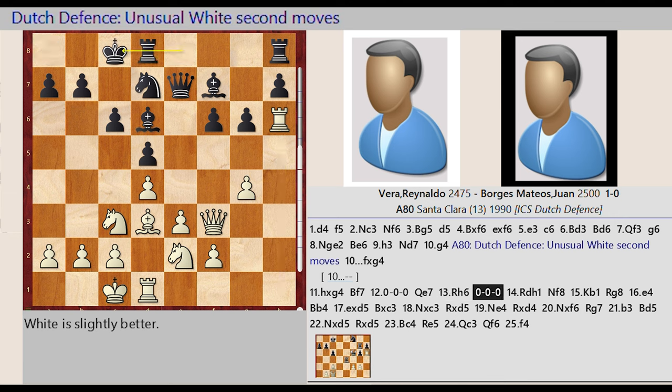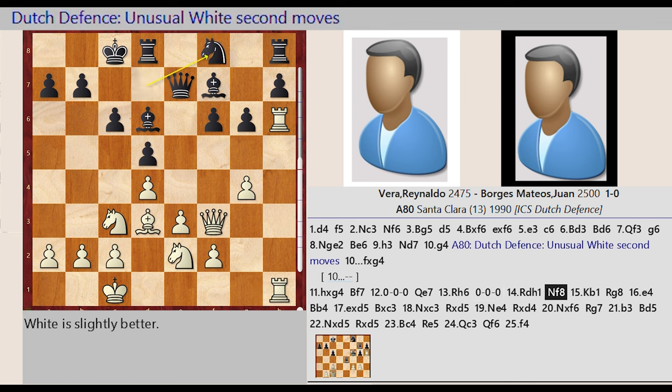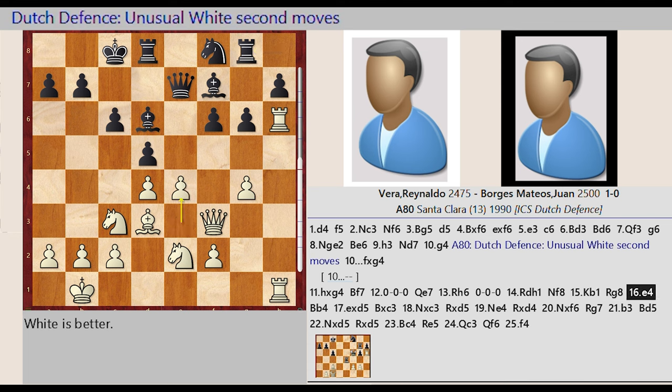Castling Queen side, Rook D1 H1, Knight D7 F8, King C1 B1, Rook H8 G8, E3 E4, Bishop D6 B4, E4 captures D5, Bishop B4 captures C3, Knight E2 captures C3.